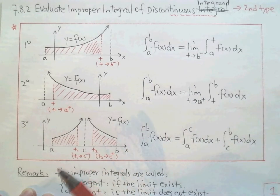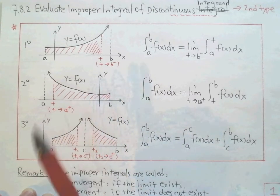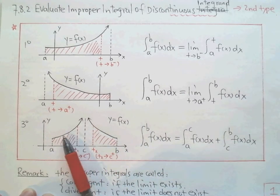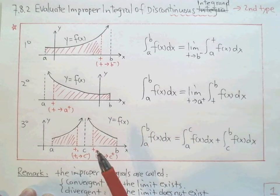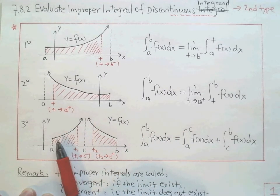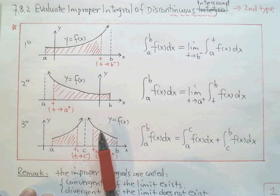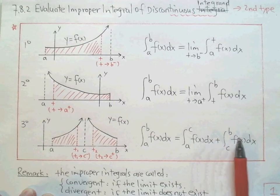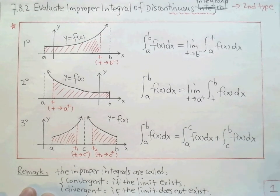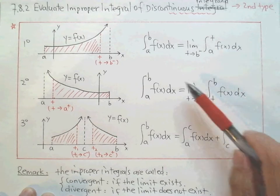We also have the third case: if the function is discontinuous not at the two endpoints but somewhere in the middle, say at c. This discontinuity is infinitely discontinuous — the function goes to infinity or negative infinity at c. So from a to c is one improper integral, and from c to b is another. If both converge, then we define the integral from a to b as the sum of both. If either limit does not exist, the improper integral diverges.